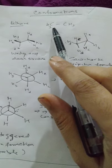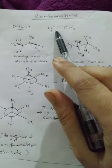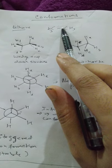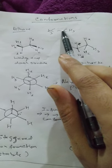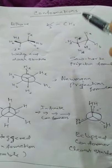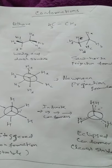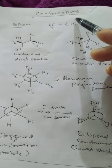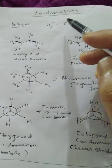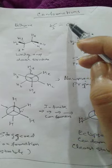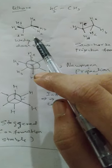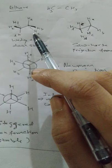Let's start with ethane (CH₃CH₃). Between the two carbons there is a single bond — a freely rotating bond. It can rotate without any problem. We want to see the conformers that arise when these two carbons rotate relative to each other. So let's talk about the various projection formulas.